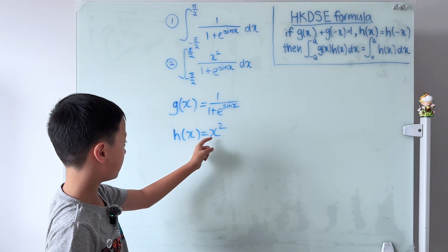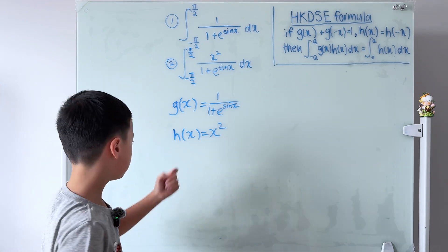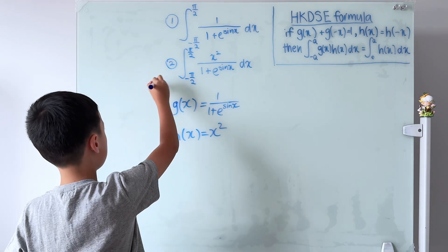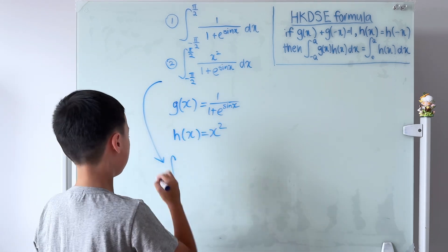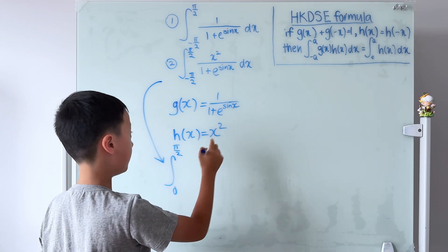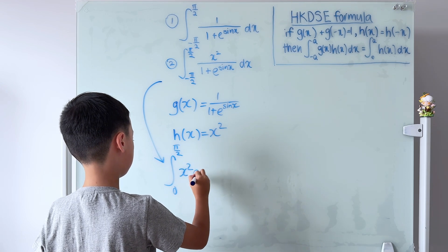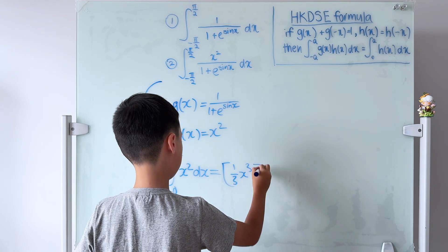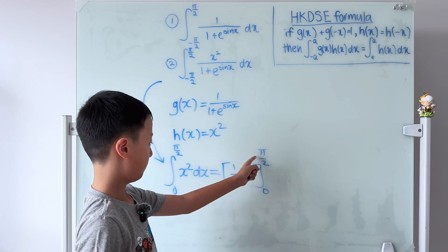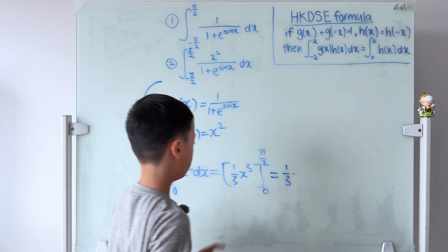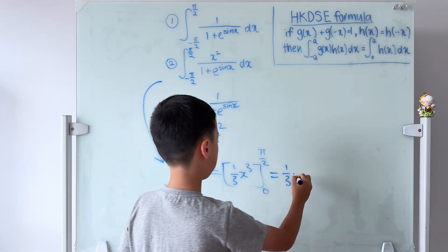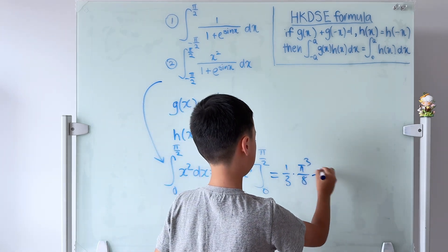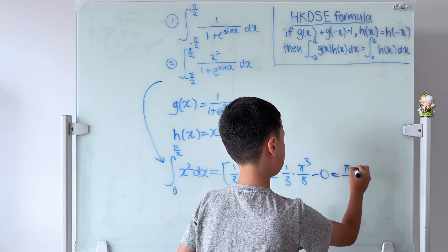That leaves h(x) = x². Plugging in −x, (−x)² = x², so x² is also suitable for h(x). Question 2 becomes the integral from 0 to π/2 of x² dx, which equals (1/3)x³ from 0 to π/2. Plugging in π/2 gives (1/3)(π/2)³ = π³/24, and the answer is π³/24.